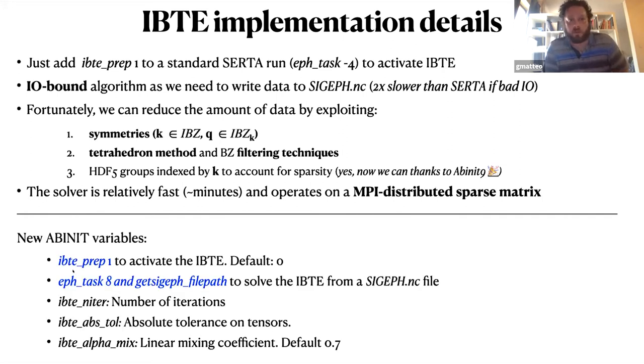There are new variables. This is the most important one to activate IBTE. If you want to solve the IBTE starting from the DFPT file, you can use these two options. And these other three variables are essentially related to the iterative eigenvalue solver.